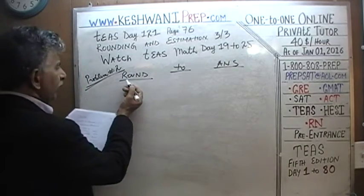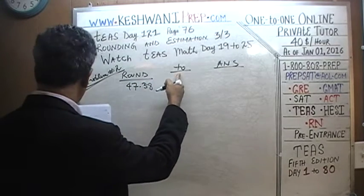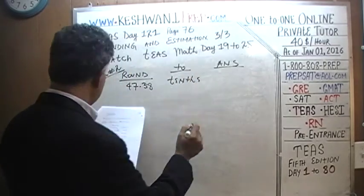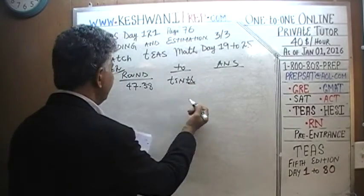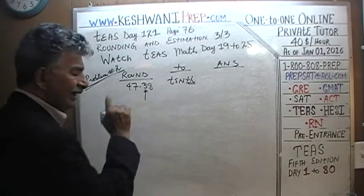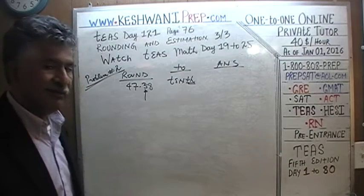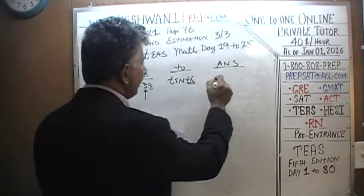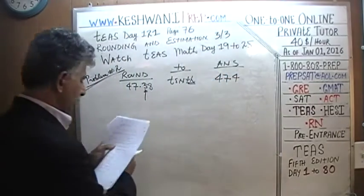It says round 48.38 to the tenth digit. The tenth digit is 3 — that is, 0.3 is the tenths digit. Since the next digit is 8, and 8 is equal to or more than 5, you're going to round it up. So 0.38 becomes 0.4, and 48.38 becomes 48.4. Let's do one more.